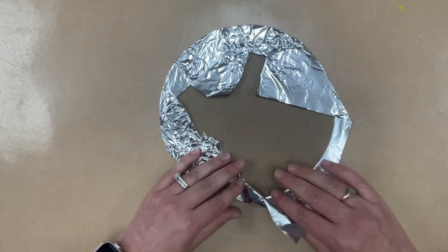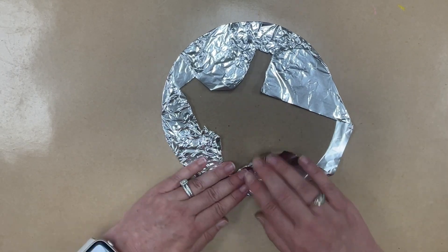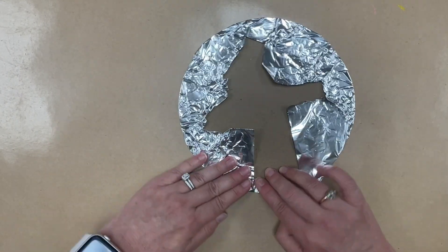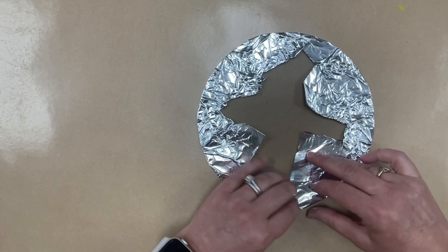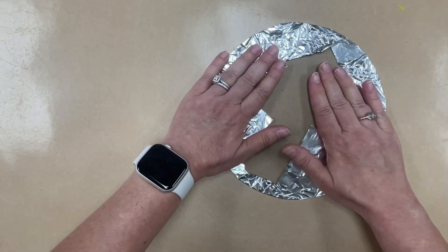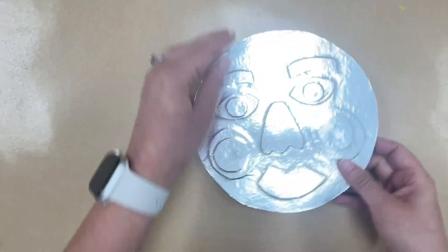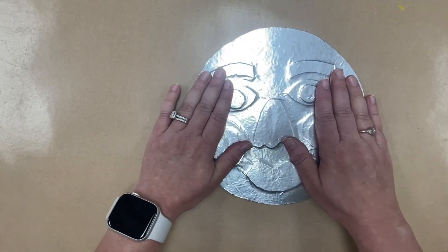You're not going to see this side. We're going to glue it to the construction paper. So it's okay if that doesn't look beautiful on the back. But when I turn it over you see it looks like that.